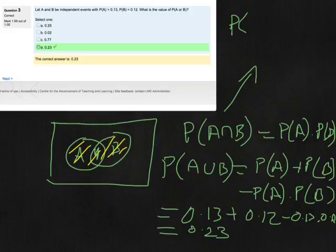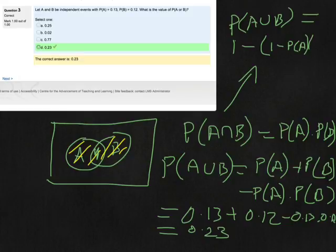That's the same thing as, so probability of A union B is equal to 1 minus 1 minus 1 minus probability of not A. Oh, what have I done? Sorry, 1 minus the probability of A multiplied by 1 minus the probability of B.